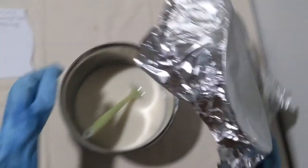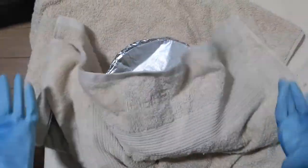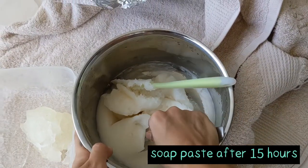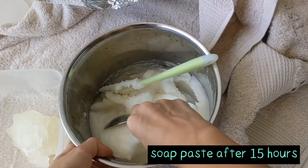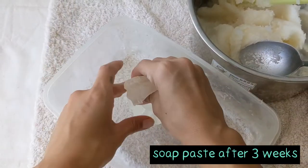To insulate it, cover it with some foil and a towel, and let it sit to saponify for at least 12 hours before checking back. After 15 hours, this is what it looks like. As you can see, it has formed into a hard paste, but the color itself is still quite creamy.